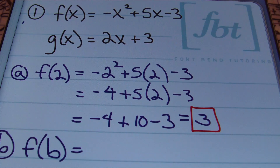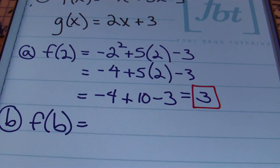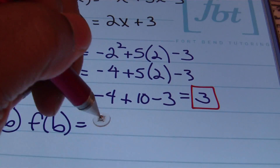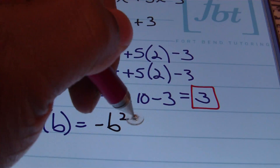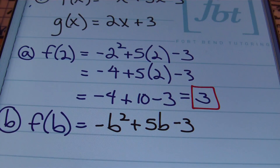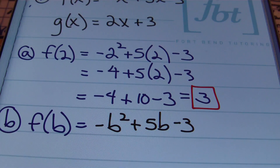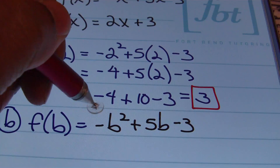In part b, they want us to find f of b, which means we're going to replace every x in the original function f with the variable b. So I now have negative b squared plus 5b minus 3. After you substitute, you always look to see if you can simplify or combine any like terms. In this case, I can't — that's the answer. You just replace all the x's with the variable b.